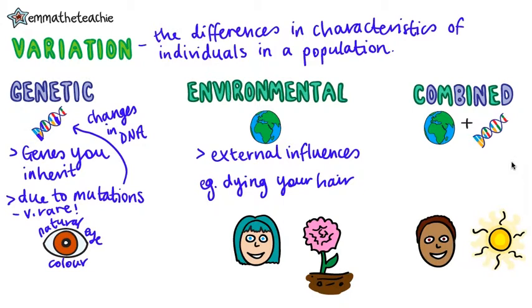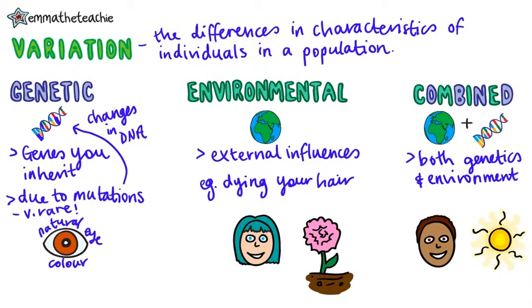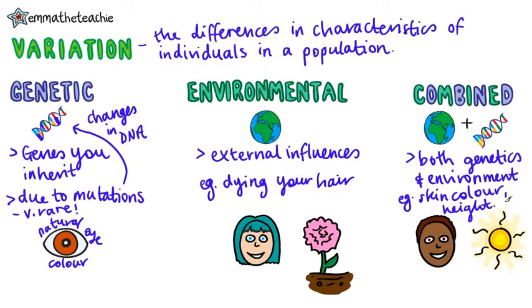And finally, there can be combined causes of variation. This is where variation is caused by both your genetics and the environment interacting together. For example, skin colour — you naturally inherit this from your parents, but if you were to spend all day sunbathing, your skin would darken. Most variation is caused by both your genetics and your environment. Other examples include height and weight.